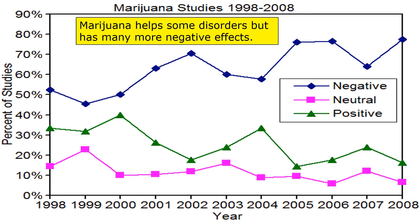Marijuana is a complicated drug because it has some potentially positive effects, especially in medical uses, but it also has many negative effects. It's further complicated because the criminalization of marijuana has resulted in a huge number of problems in society. So it's probably better to decriminalize marijuana, but still warn people about its dangerous effects.